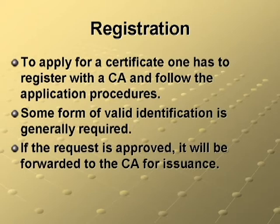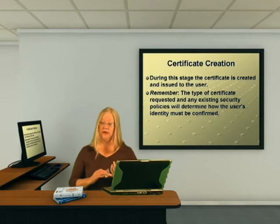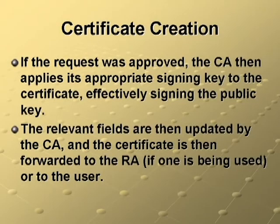If the request is approved, it will be forwarded to the CA for issuance. During this stage, the certificate is created and issued to the user. The type of certificate requested and any existing security policies at the certificate authority will determine how the user's identity must be confirmed. This step may be called creation, issuance, or even generation, but the process is the same regardless of the name used. If the request was approved, the CA then applies its appropriate signing key to the certificate, effectively signing the public key. The relevant fields are then updated by the CA and the certificate is forwarded to the registration authority, if one is being used, or to the requested user.